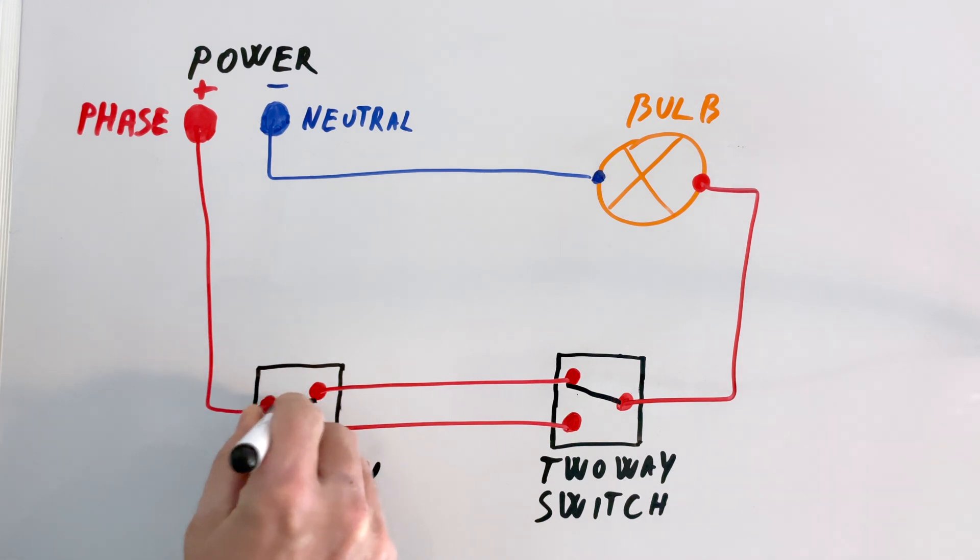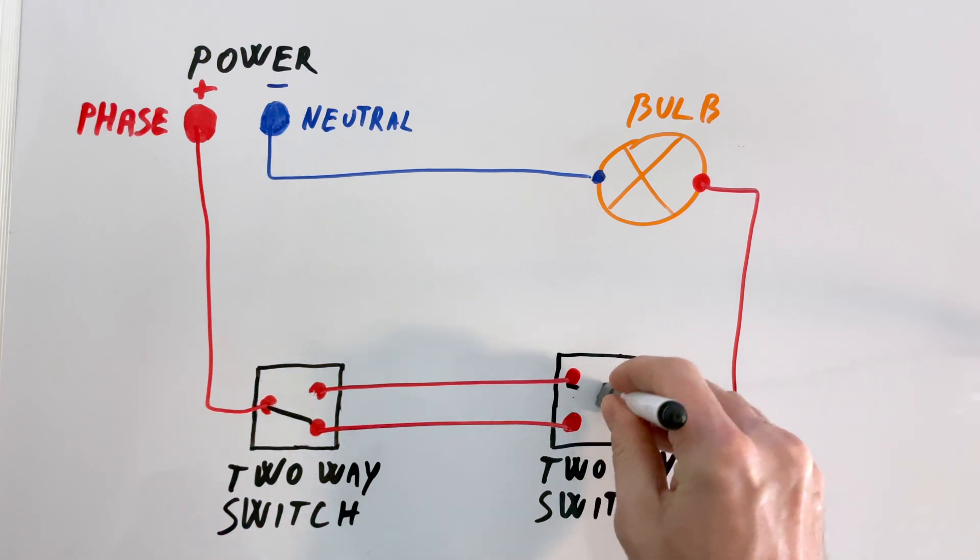But if you toggle one of the switches, the connection moves to another contact, opening the circuit so the bulb turns off. If you toggle any switch again, the circuit closes, and the bulb turns back on.